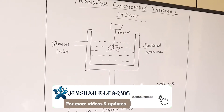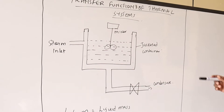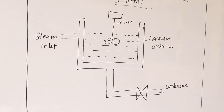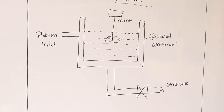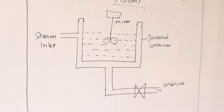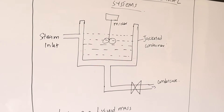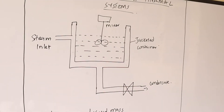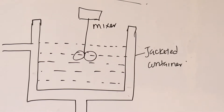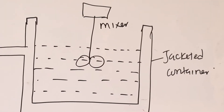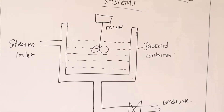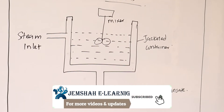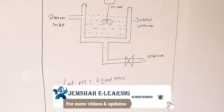So consider a system. We are going to look at an example whereby you consider a jacketed container that is used to heat a liquid. A stirrer is used in order to maintain a uniform temperature throughout the liquid. The input of this is the jacket temperature, which is theta J.